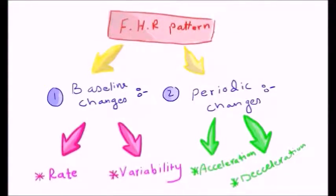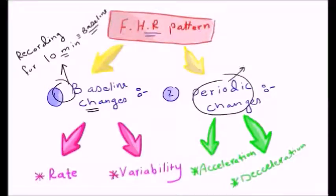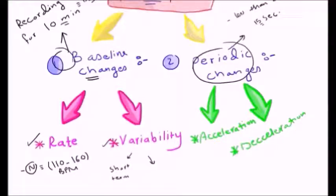Now here is a framework about the fetal heart rate pattern. We have baseline changes, which are recordings of the fetal heart rate for 10 minutes. We also have periodic changes, which are changes occurring in less than two minutes, on average 15 to 20 seconds. In baseline changes, we look at the rate — the normal fetal heart rate is 110 to 160 beats per minute — and we have variability, both short-term and long-term. In periodic changes, we have accelerations, where the fetal heart rate goes upward, and decelerations.